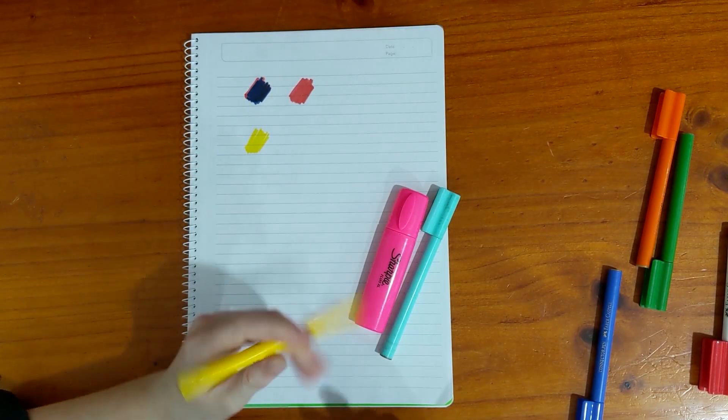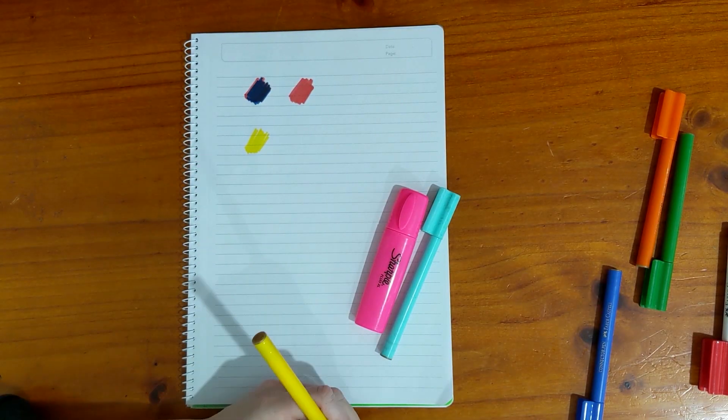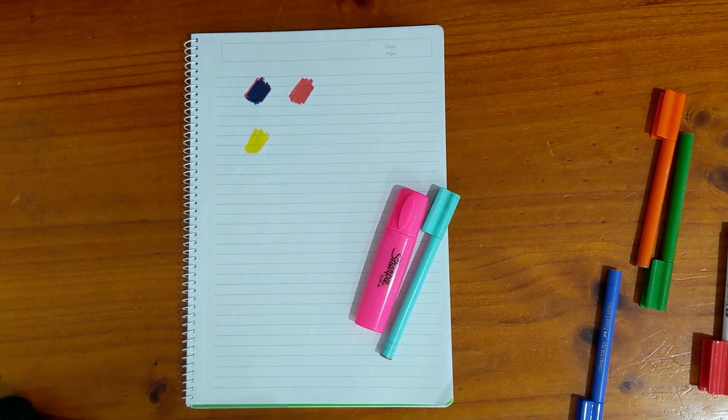Our eyes don't have a detector for yellow, just red and green. So when it sees them both at the same time, it creates this image of what we see as yellow.